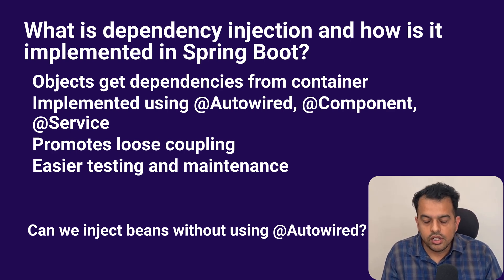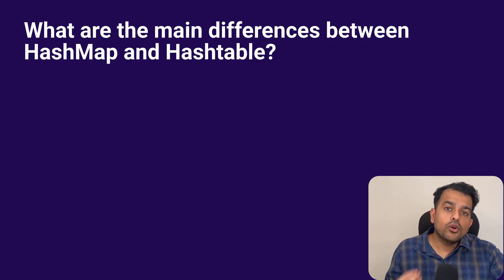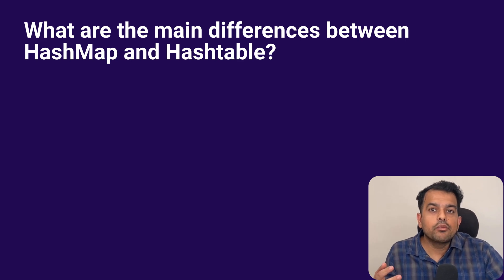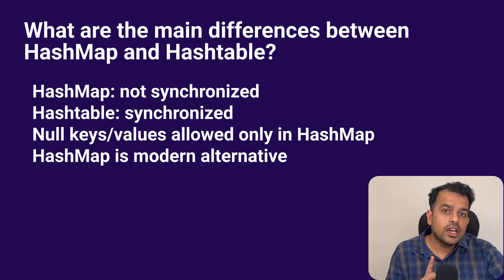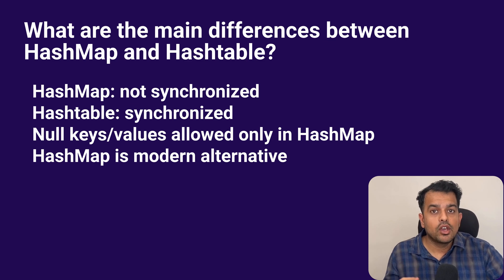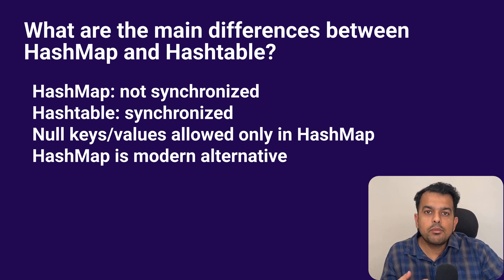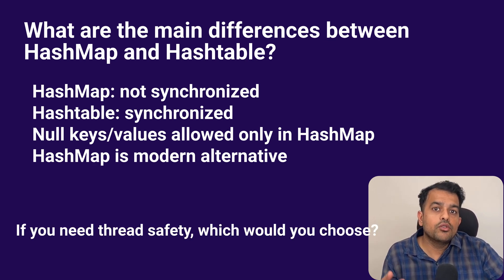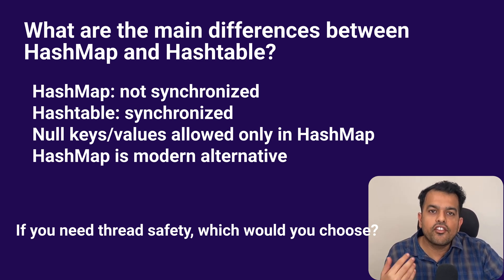Then they moved to another Java question: what are the main differences between HashMap and Hashtable? Both store data in key-value pairs, but HashMap is not synchronized while Hashtable is synchronized. HashMap allows one null key and multiple null values, whereas Hashtable doesn't allow any null key or null value. Hashtable is legacy while HashMap is preferred in modern code. A follow-up: if you need thread safety, which would you choose? I would prefer ConcurrentHashMap because it's more efficient than Hashtable for multi-threaded environments.